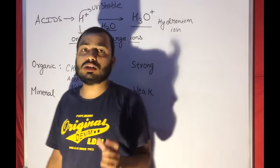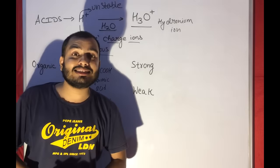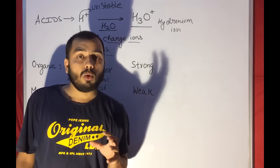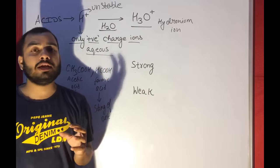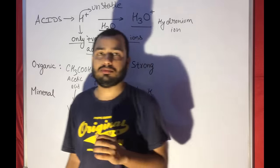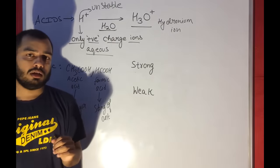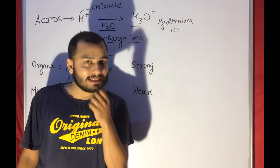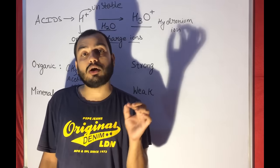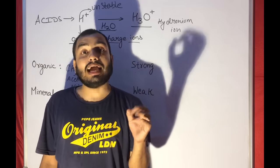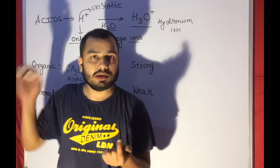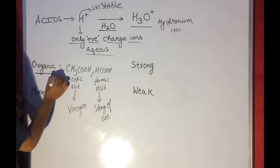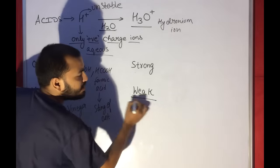There are many other organic acids: lactic acid, found in sour milk; citric acid, found in oranges and sour fruits like lemon; and tartaric acid, found in tamarind — also called imli or amchur. So all these are organic acids, and nearly all organic acids are weak.